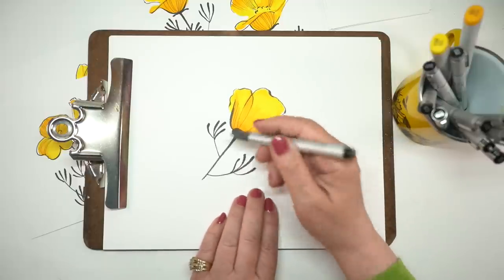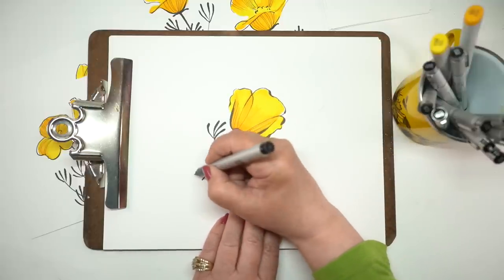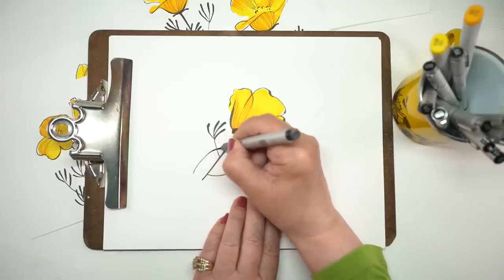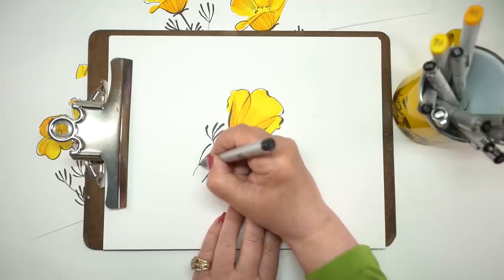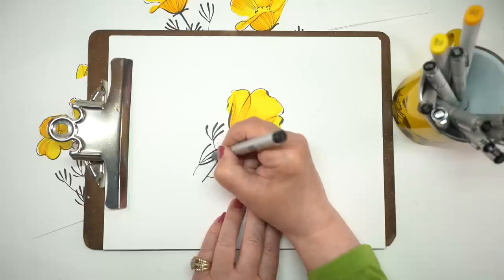Whereas if you start with the color shape underneath of it and refine that, fuss around with it, then by the time you get to adding the black lines around the flower, you know where you're headed. So it's a little bit easier in my mind to go this direction.